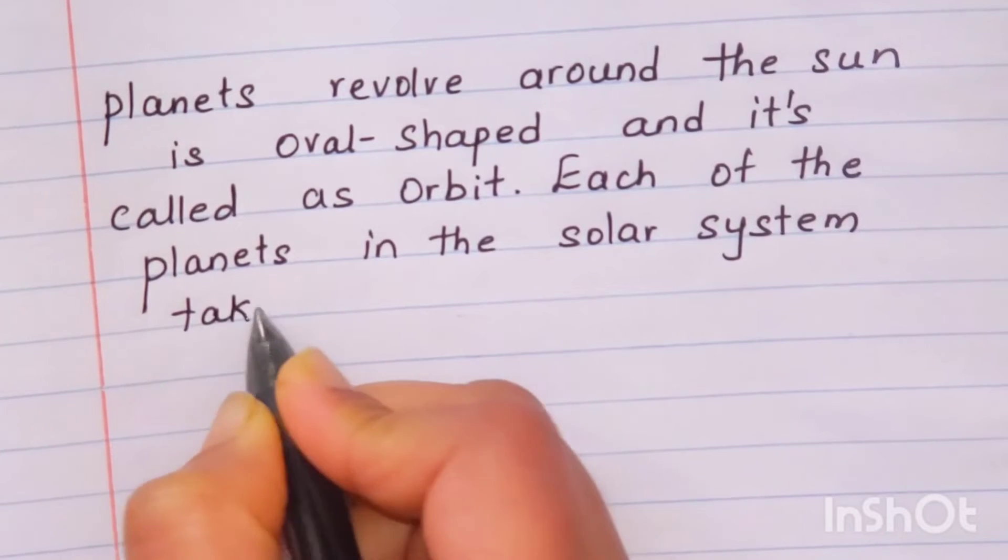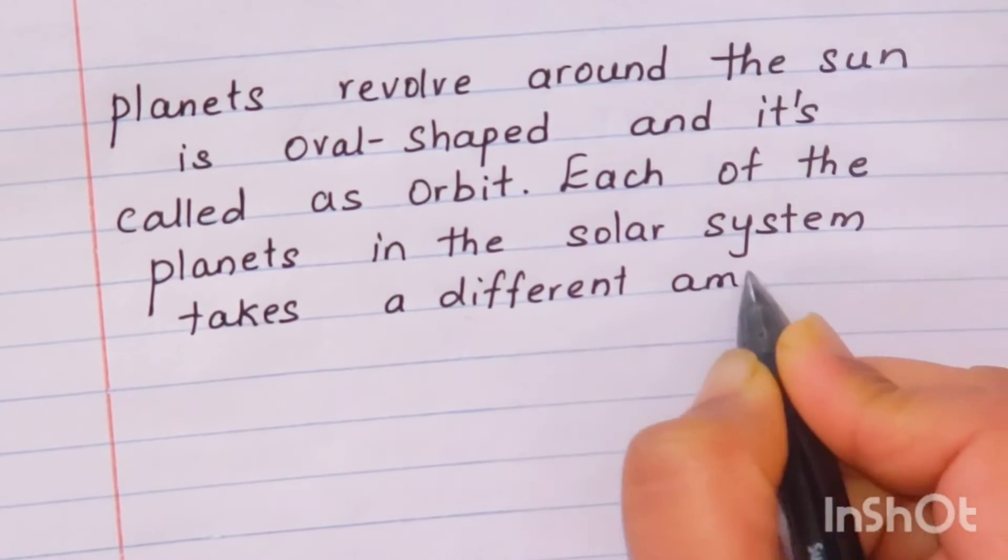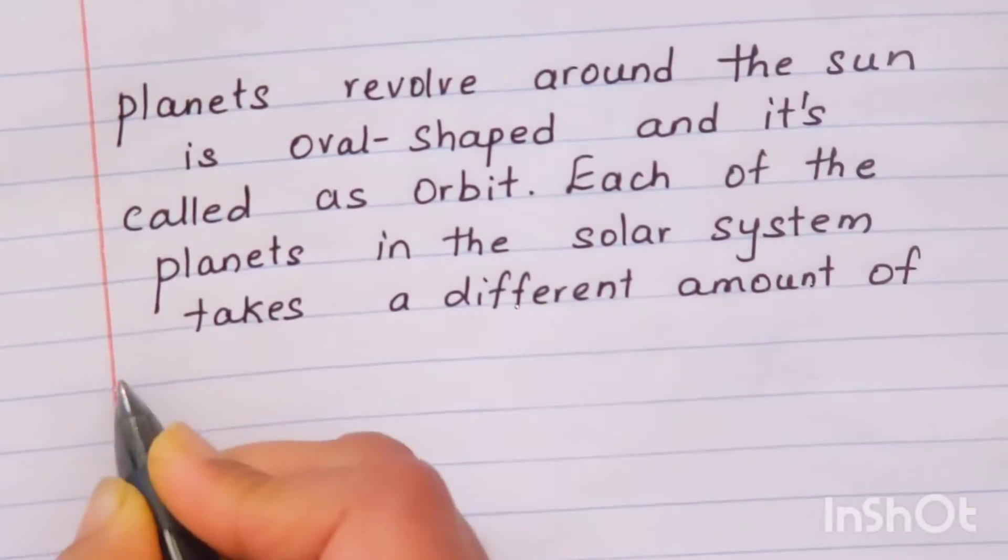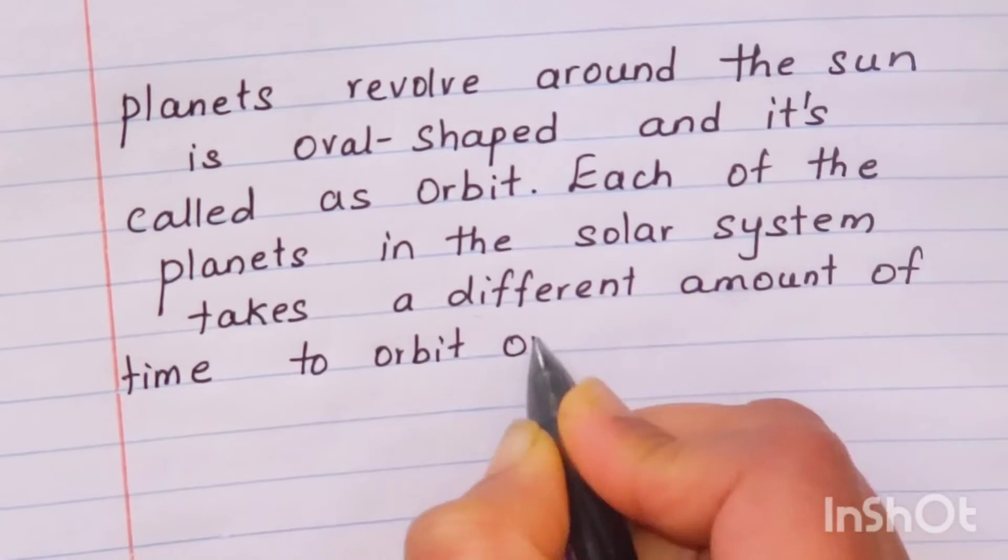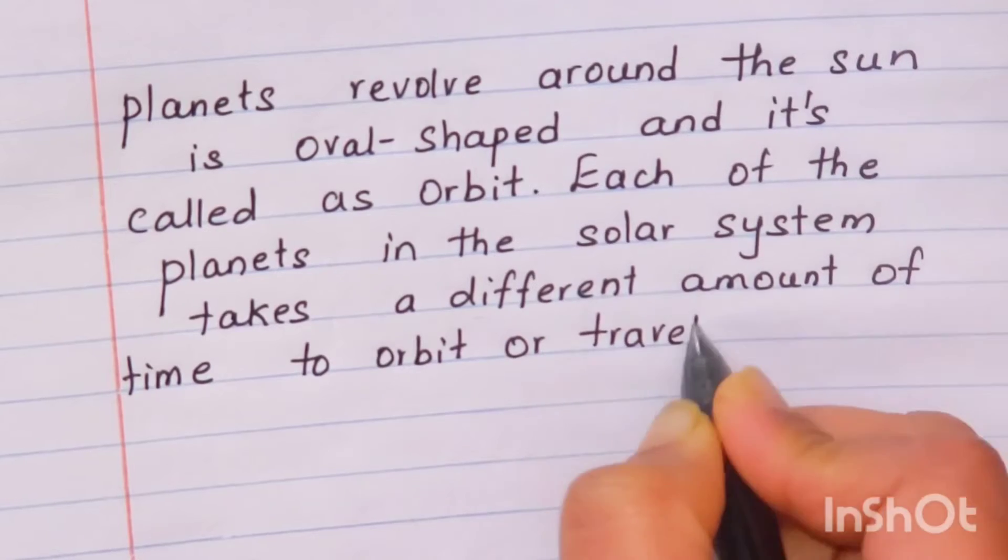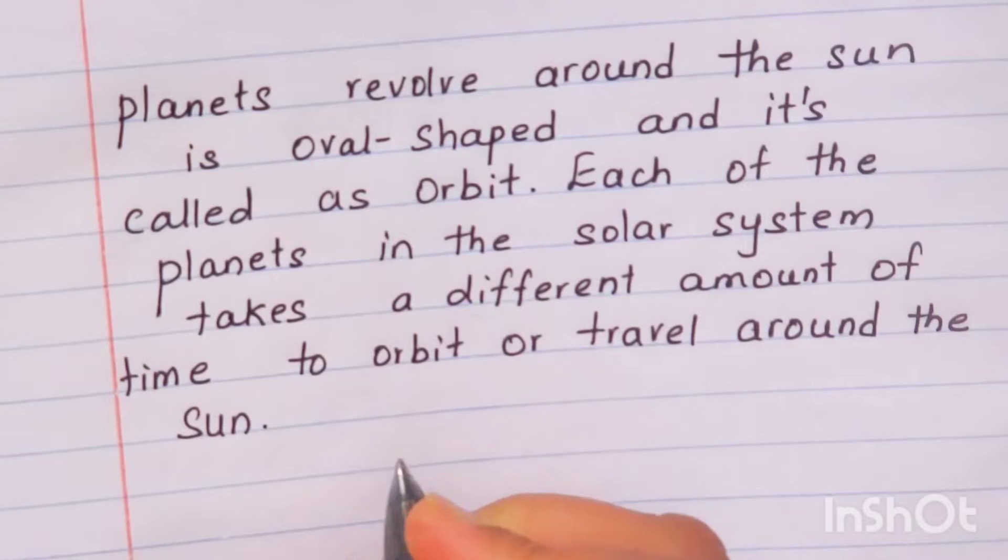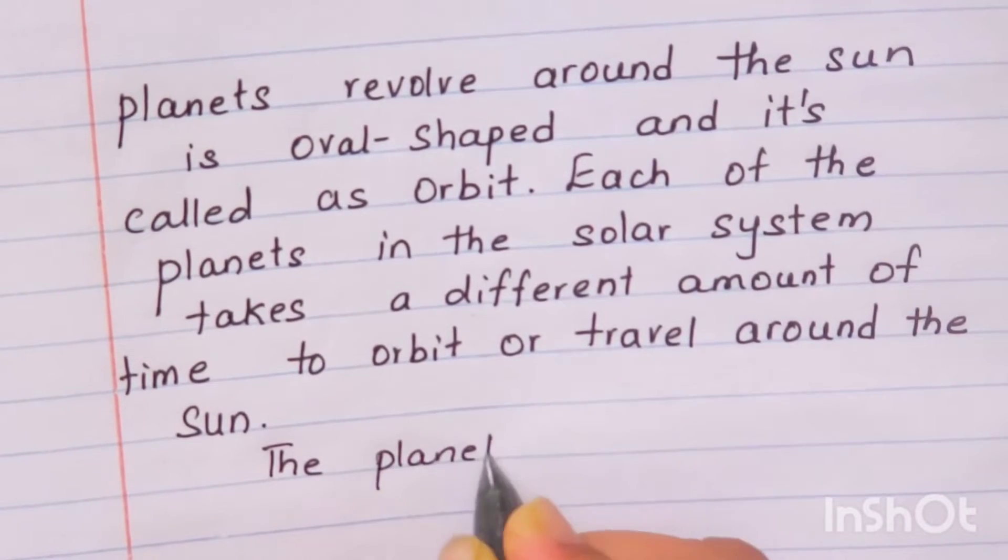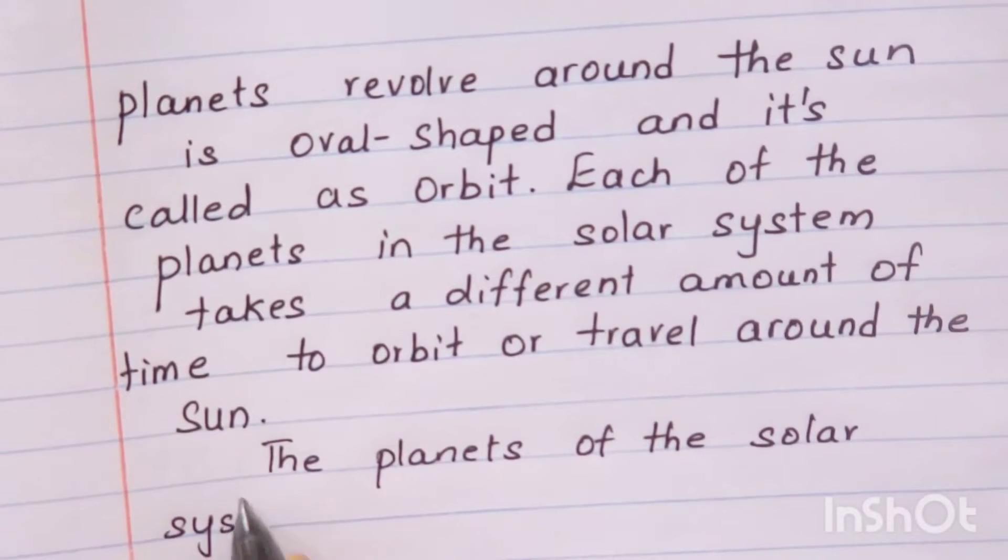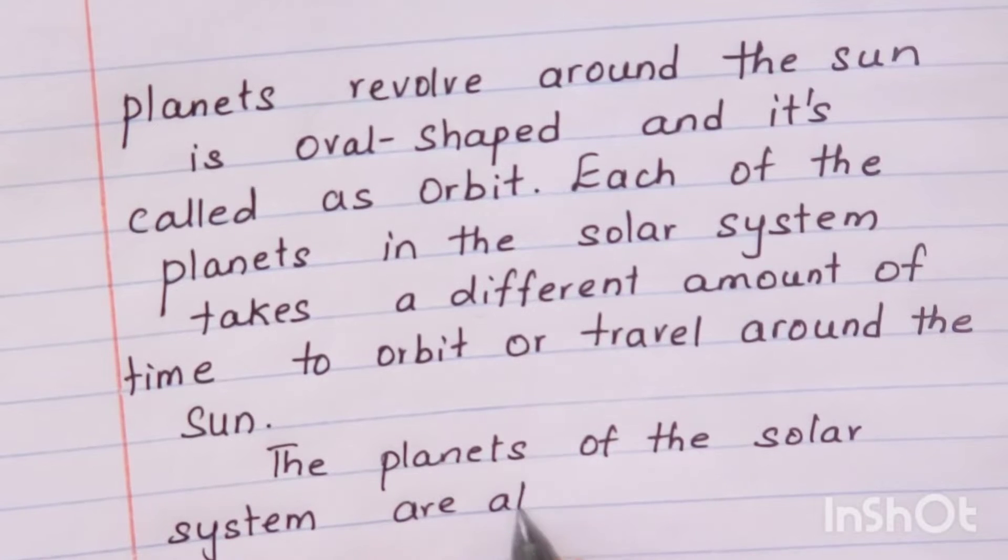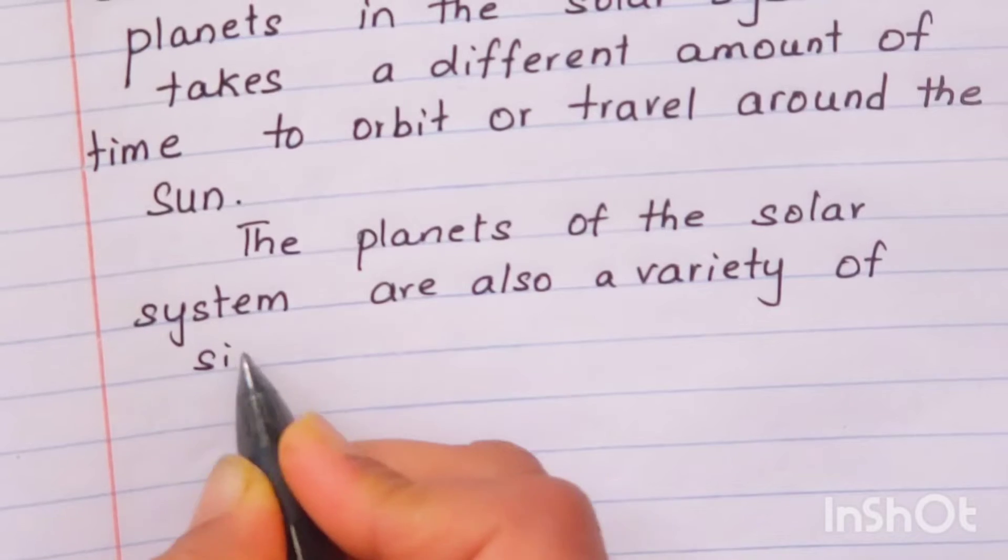Each of the planets in the solar system takes a different amount of time to orbit. Like earth takes 24 hours to rotate in complete one axis. In Jupiter, it is 6 hours.